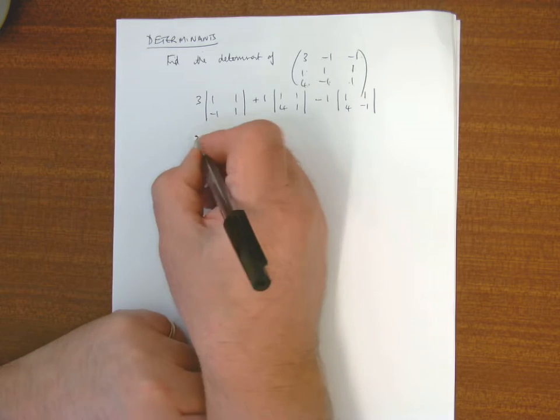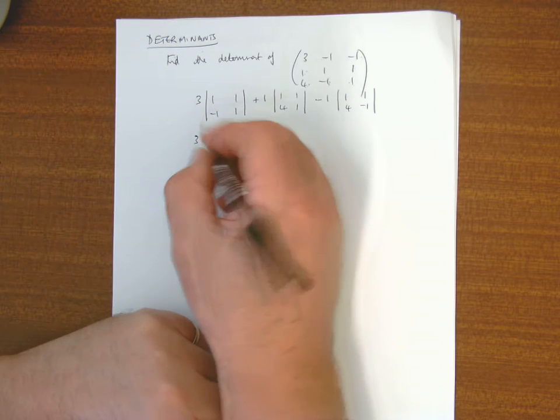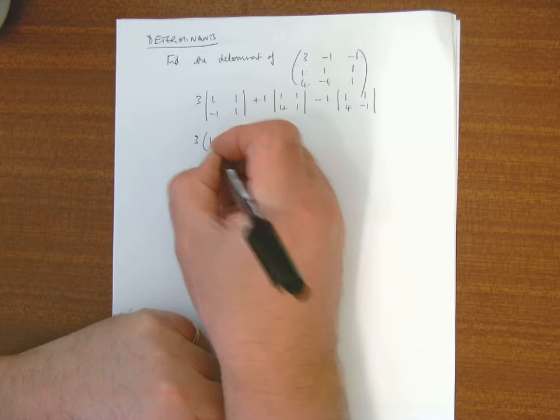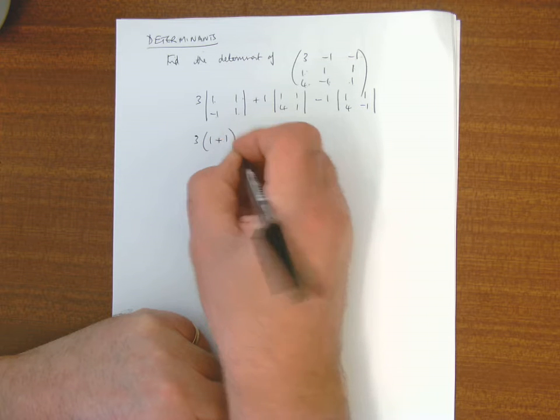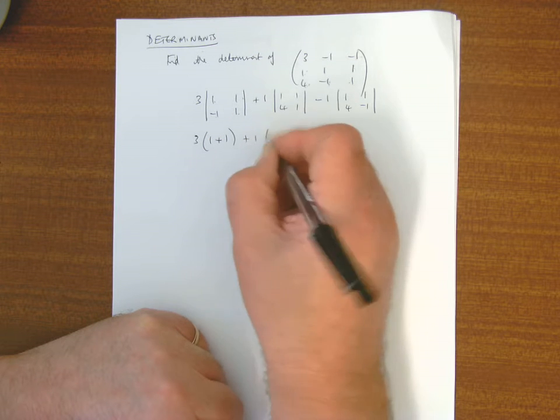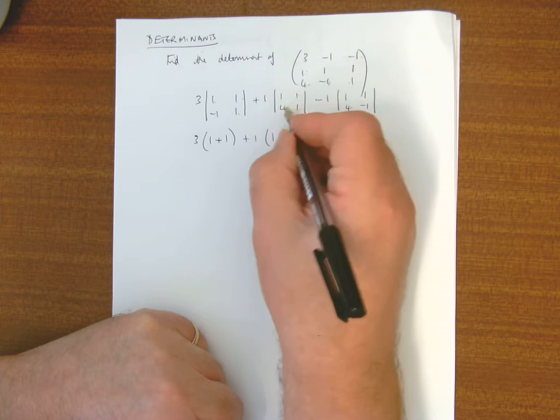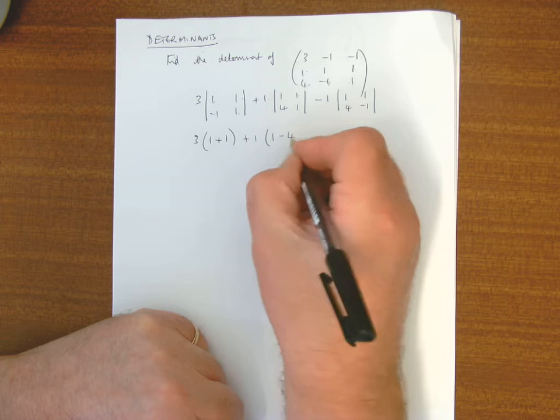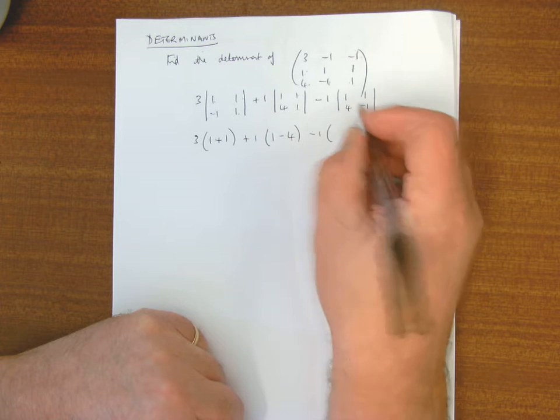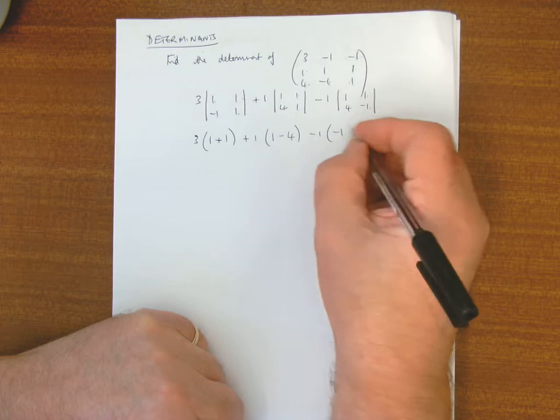And then like I do in the 2x2 determinant, it's 1 times 1 is 1, take away minus 1, so it's plus 1, 1 times 1, 1 times 1 is 1, minus 4, 1, 4 times 1 is minus 4, minus 1 times minus 1, minus 4.